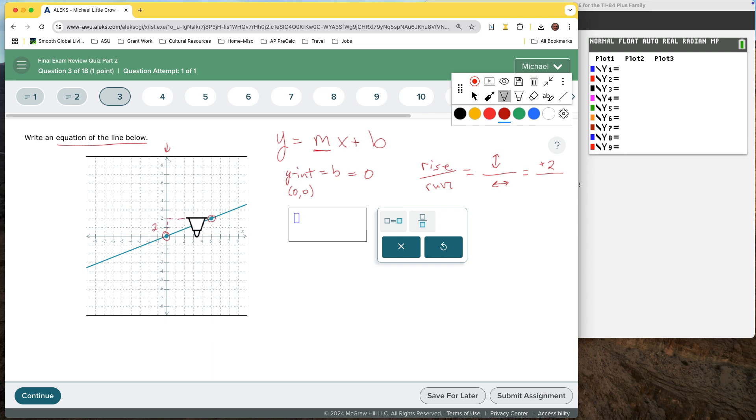One, two, three, four, five. It's a distance of five. So my run is five. Positive five. Two fifths.